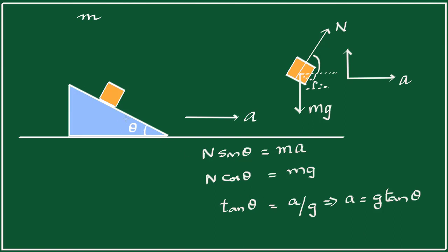If the acceleration is less than this, the block will slide down the incline. If the acceleration is more than this, the block will slide up the incline. This is the exact acceleration for which the block will stay on the incline as the incline accelerates.